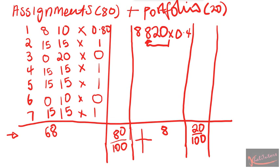To get your final mark, you know that your class mark contributes 80% of your final mark, and your portfolio contributes 20% towards your final mark. So you're going to take this 68, multiply by 80% which is 0.8, and then multiply this 8 — remember, this 8 comes from your portfolio mark.